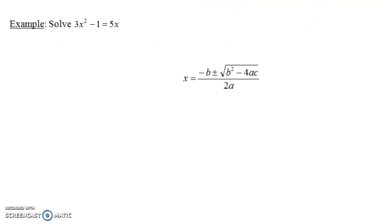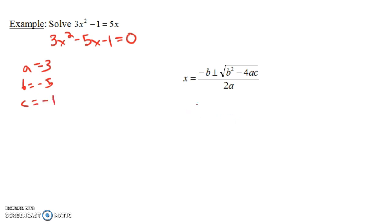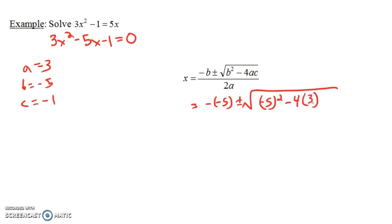We have 3x squared minus 1 equals 5x. We need to gather everything on one side, so subtract 5x from both sides to get 3x squared minus 5x minus 1 equals 0. Here a equals 3, b equals negative 5, and c equals negative 1. Plugging into the quadratic formula gives us negative negative 5 plus or minus the square root of negative 5 squared minus 4 times 3 times negative 1, all over 2 times 3.